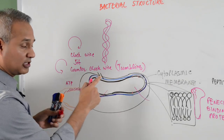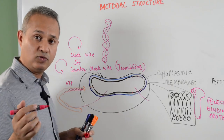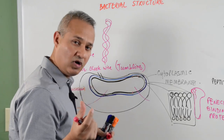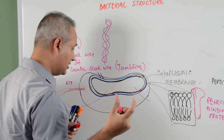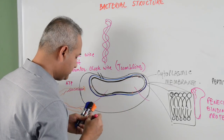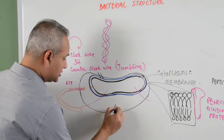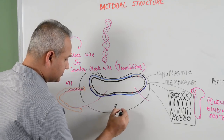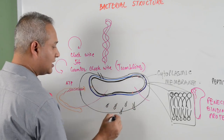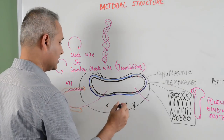There are also fimbriae. Fimbriae and pili are essentially the same things — fimbriae are smaller, pili can be a little bigger, and there can be sex pili as well. These are small proteinaceous materials, mostly present on gram negative bacteria. Gram positive bacteria have fewer fimbriae compared to gram negative.